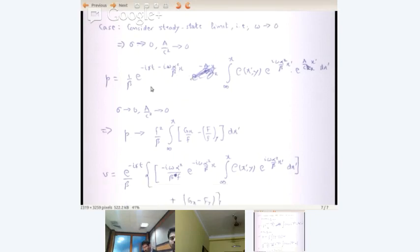This is the expression we had for P: 1 by beta, e power minus i sigma t minus i omega alpha squared by beta into x, integral from infinity to x, e of x prime y, exponent i omega alpha squared by beta x prime. How did this term come in? I don't think this term should be there. It is part of this omega dx prime.